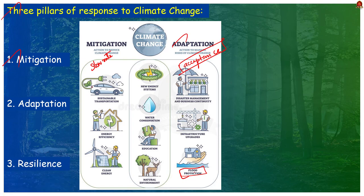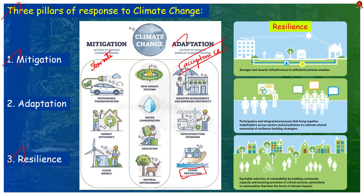The third important pillar is resilience, meaning the key economic and social systems are climate-proofed for the future. Nations need to become more resilient to the effects of climate change. For example, they can introduce flood insurance for high-risk areas, make resources available to strengthen homes and structures to withstand extreme storms, and develop infrastructure for temporary evacuation and sheltering of vulnerable populations.